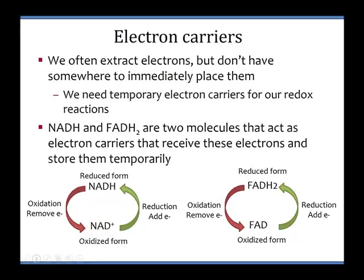We will take food molecules and rip away the electrons from them — we oxidize the food molecules. But when we rip those electrons away, we can't just let them wander around. Electrons are kind of like little kids: if you let them go by themselves, they're going to make a mess, get lost, destroy things. So we can't let those electrons go free — we have to give them to an electron carrier.